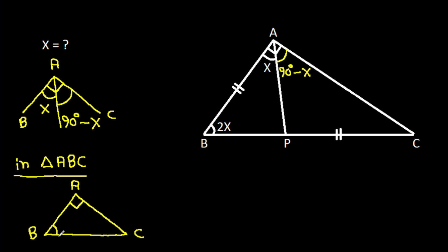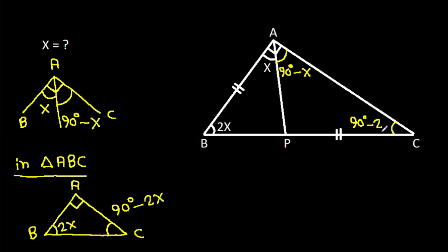Angle ABC is 2x, so the remaining angle — angle BCA — will be 90 degrees minus 2x.